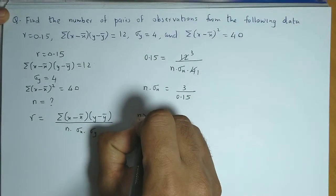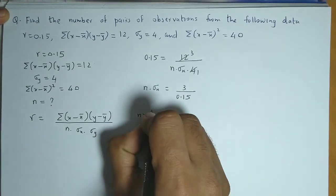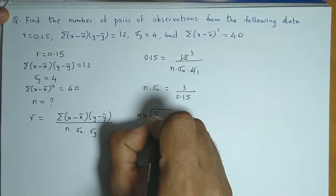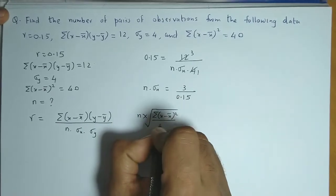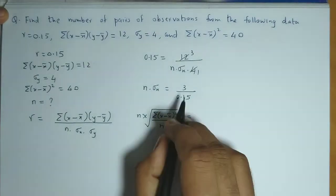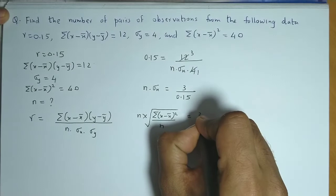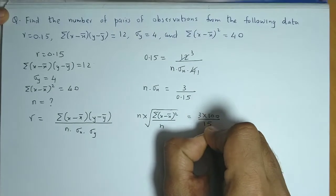Now here we apply the formula for standard deviation of x which is square root of summation (x - x̄)² divided by n equals 0.15. If we remove the decimal places we have 3 times 100 divided by 15.